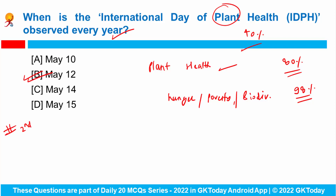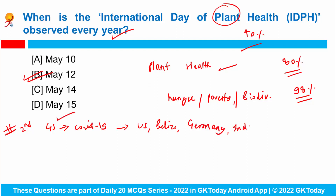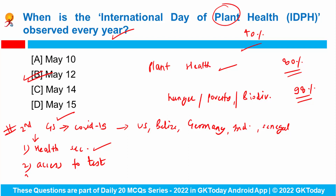The second global summit on COVID-19 was recently held virtually. The summit was co-hosted by the US, Belize, Germany, Indonesia and Senegal. The objectives of this conference were: first, to ensure health security for future health crises; second, to enhance access to tests and treatment; and third, to accelerate efforts to increase global vaccine coverage.